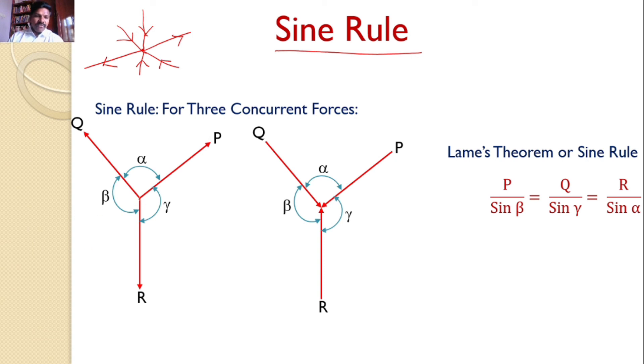Similarly, the force R divided by the angle between the other two forces, that is, P and Q is alpha. So, R by sine alpha is constant.